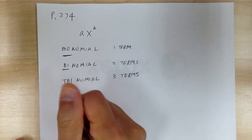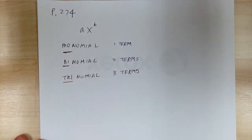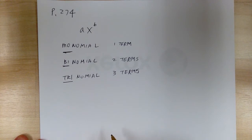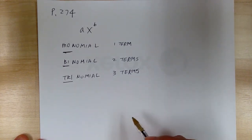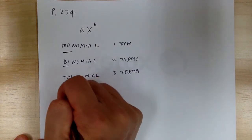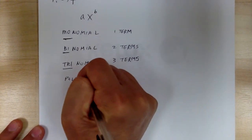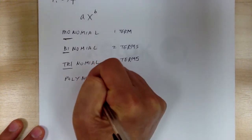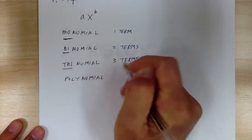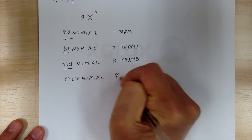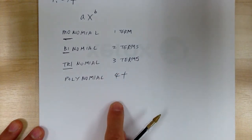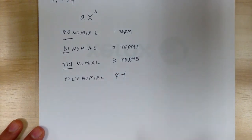You need to know what those terms mean. Trinomial is like tricycle or triangle — tri means three. And anything after, when you have four or more, you just call it polynomial.